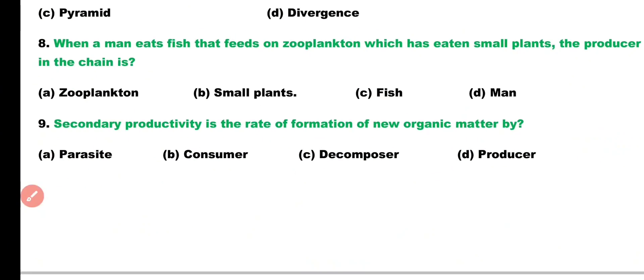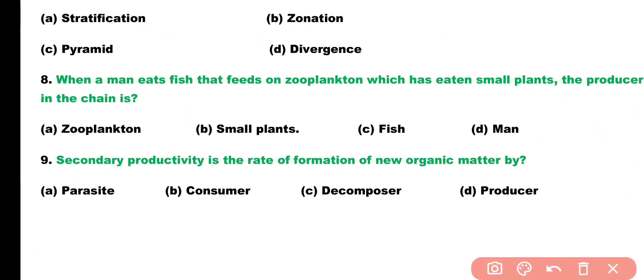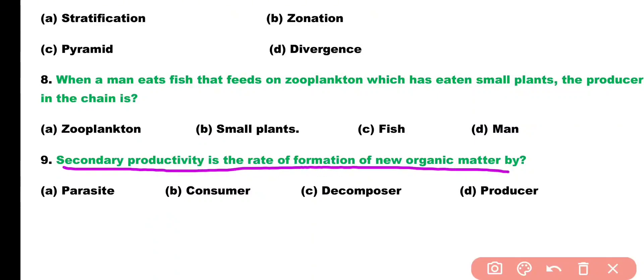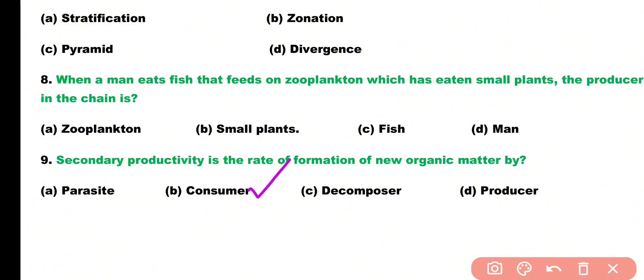Question number nine. Secondary productivity is the rate of formation of new organic matter by: parasites, consumers, decomposers, or producers? Correct answer is option B. Secondary productivity is the formation of new organic matter at the level of consumer.